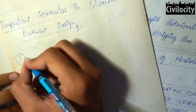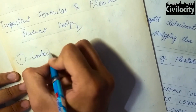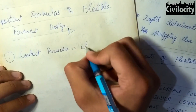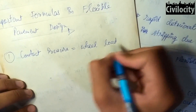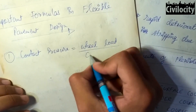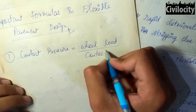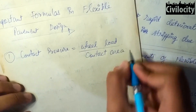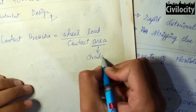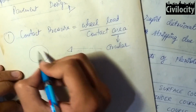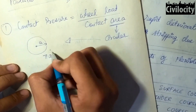Our first topic is contact pressure. Contact pressure is the load applied on the particular area of contact with the pavement. It is defined as the wheel load divided by the contact area, and this area is always circular in nature. If A is the radius of contact, then the area is given as π·A².